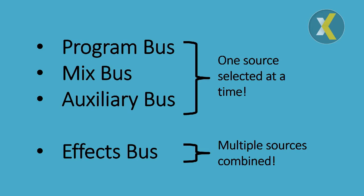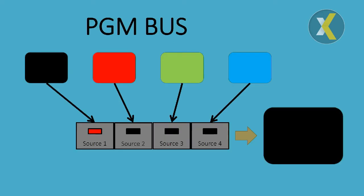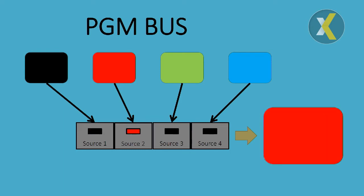Let's take a look at a couple of examples and we start with the typical program bus. Four sources in, one of them selected, and the black source selected will be the output of the bus. If we select source 2, source 1 is inactive or deselected and the red is the output of the bus. Same if we select source 4, that becomes the output of the bus — so one source active at a time.